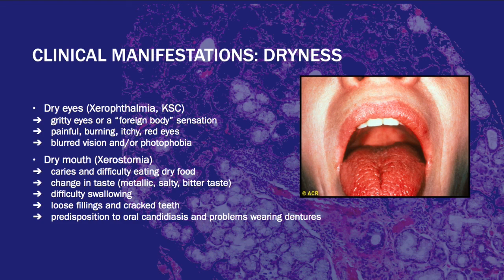The most common presentation for Sjögren's Syndrome is sicca, which consists of keratoconjunctivitis sicca or xerophthalmia, resulting from a deficient aqueous layer of tear film — which normally comprises 90% of the tear volume. This presents as gritty eyes, foreign body sensation in the eyes, pain, burning, itchy, red eyes, and that can lead to corneal erosions, blurry vision, photophobia, and visual loss.